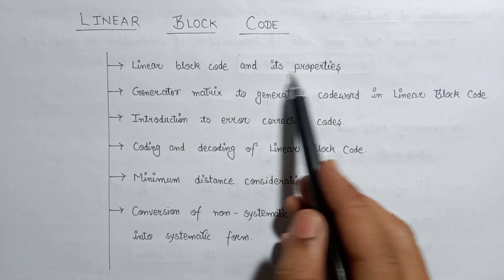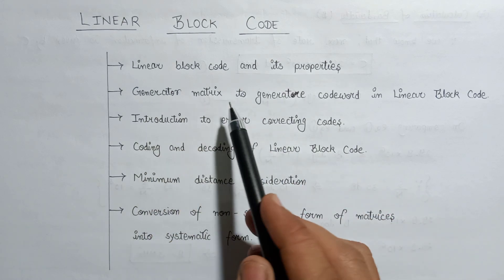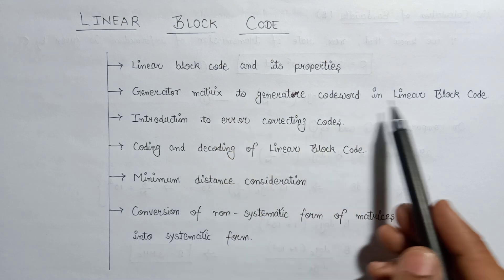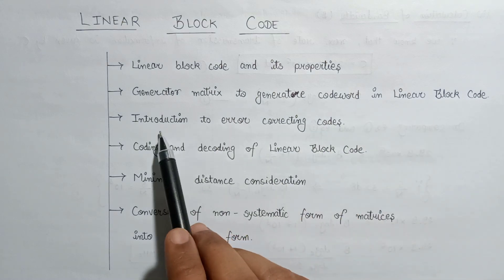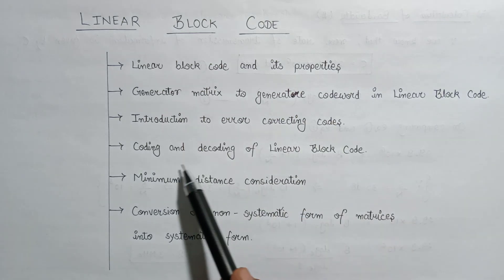its properties. This is the introductory lecture. After that, we will have a look at the generator matrix representation in form of Linear Block Code. After that, we will have a look at the error correcting code. Then we discuss